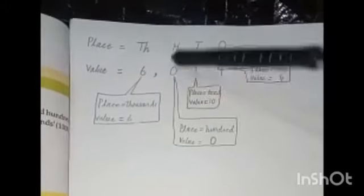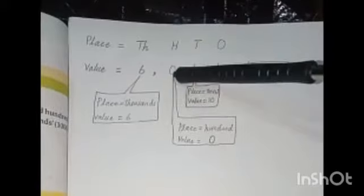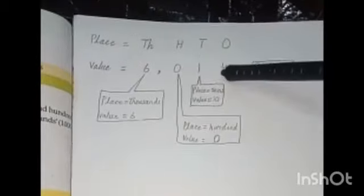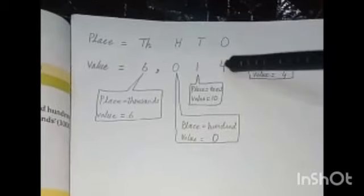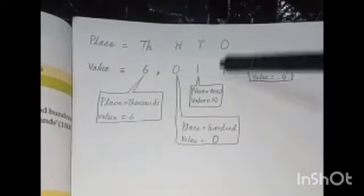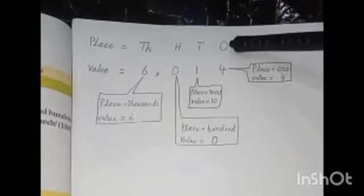The value will be nothing because it is having no hundreds. Here is tens, 1 ten, so the place is 10 and the value is 10. And here, number 4 is the value and 1 is the place.